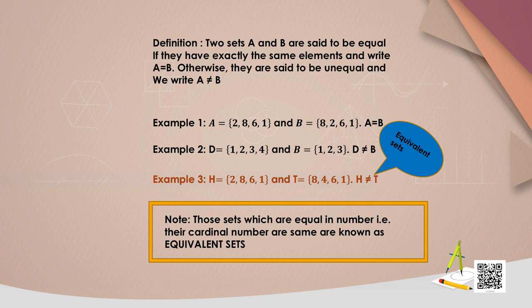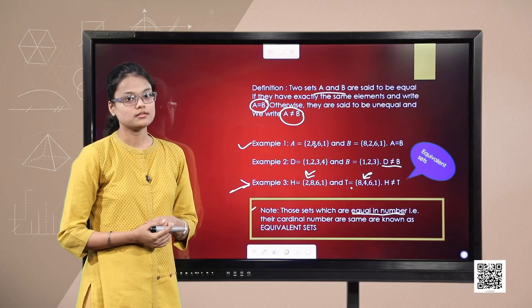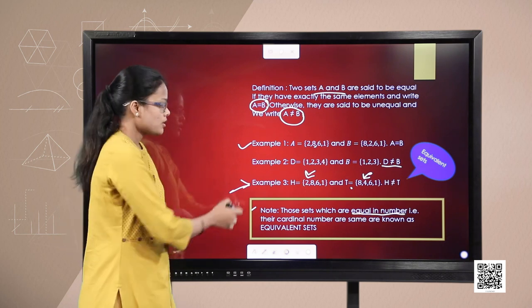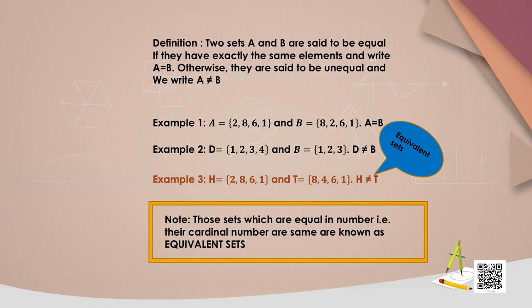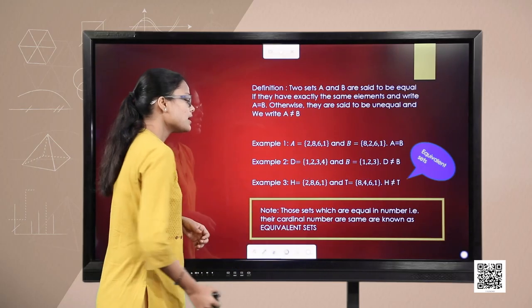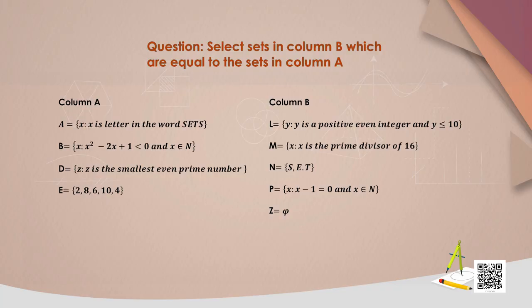Students, observe that when two sets are equal in number of elements, the sets are said to be equivalent sets. From our three examples, example 3 represents equivalent sets — they have the same number of elements but are not equal.